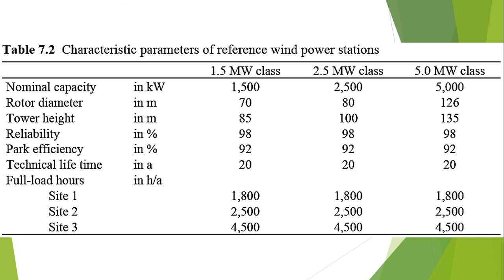The resulting full load hours — that is, the ratio of approximate annual power generation to nominal converter capacity — for various wind converters of the same capacity are illustrated in this table. A generation availability of 98% as the reliability factor and a wind power efficiency of 92% have been assumed to assess the costs incurred by wind power utilization. The variable and fixed costs of the reference plants are mentioned, and the power generation costs are calculated in relation to the respective available wind quantities.